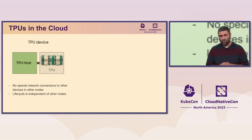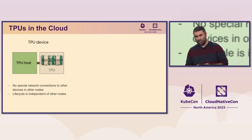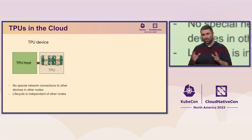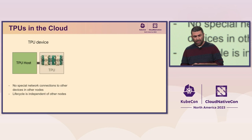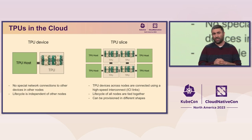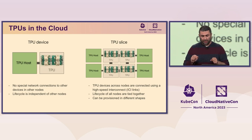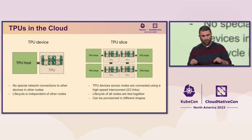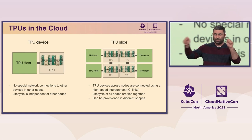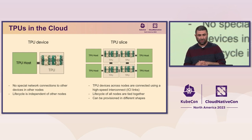There are two main form factors for TPUs. One is what we call the TPU device, where you have a single VM attached to a TPU device with no special network communication with other devices in the cluster — usually designed for inference type workloads. But our focus is on the other form factor: TPU slices, where you provision a group of VMs as a unit. The TPU devices on those VMs are connected with special high-speed interconnect links — pretty much fiber links that are point-to-point between devices. It is specifically designed for distributed training workloads.